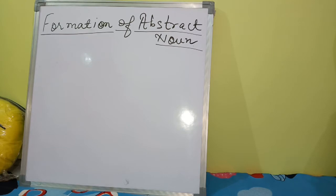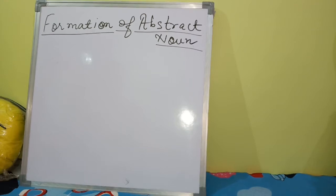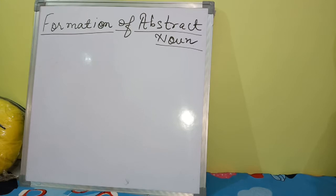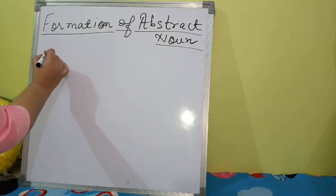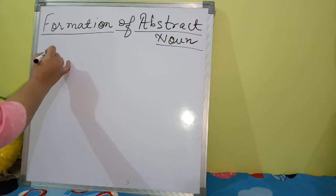In Hindi: abastha, gun, bhao ya vichar ke naam jinhein hum keval soch sakti hain, unhain touch nahi kar sakti hain — yahi abstract noun hai. Ab dekhte hain abstract noun kaise form hote hain.